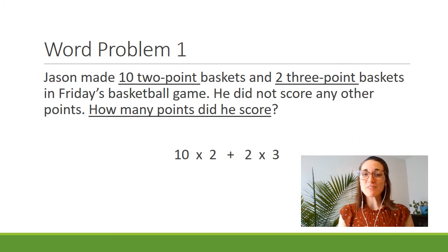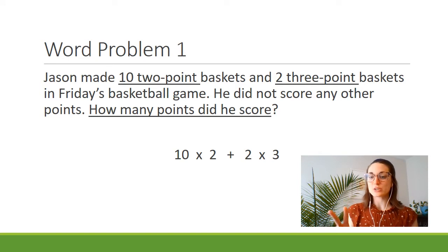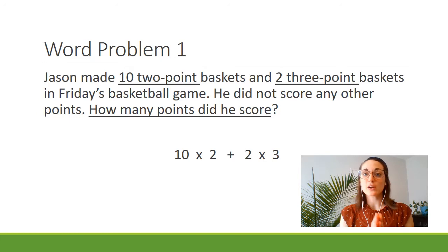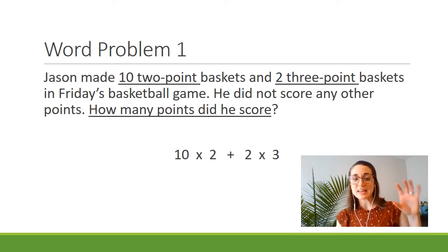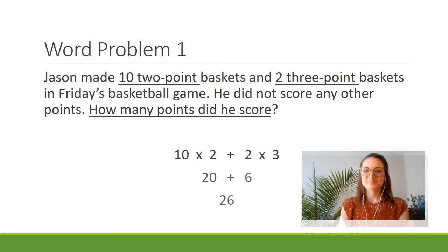Now that I have all of my numbers written out, I'm going to decide which operations need to go between the numbers. I see that there are ten baskets that are worth two points each, so I need to multiply together the ten and the two. I also see there are two baskets worth three points each, so I need to multiply together the two and the three. Now if I'm trying to find out how many total points this man scored in the basketball game, I need to take ten times two and two times three and add them together.